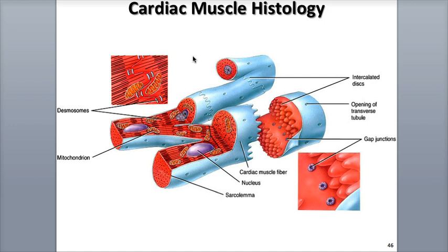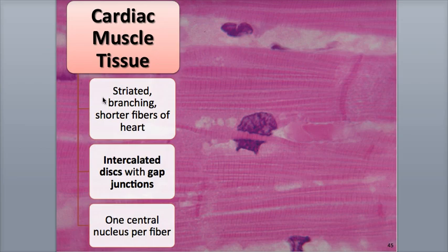as well as gap junctions — openings which are able to convey and propagate the muscle action potential from fiber to fiber to allow synchronized, coordinated contraction of the heart's chambers.